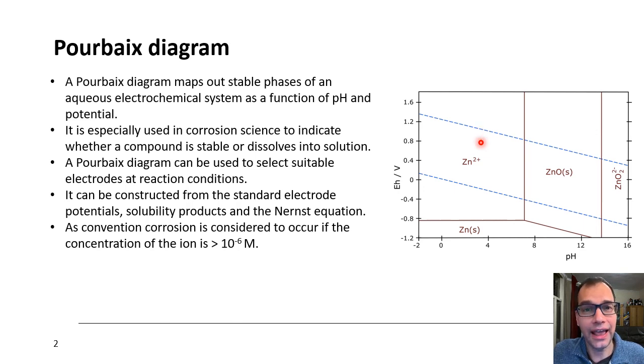Now, a Pourbaix diagram, you can actually make Pourbaix diagrams yourself based on information in literature. All you need are standard electrode potentials, solubility products, and the Nernst equation. And we will show you in this screencast how you can make a Pourbaix diagram. For that, it is important that in the calculations you need to make to construct a Pourbaix diagram, the concentration you have to use is 10 to the minus 6 molar.